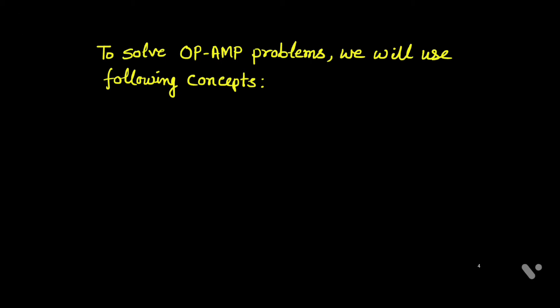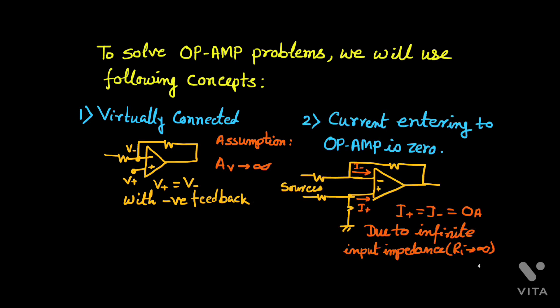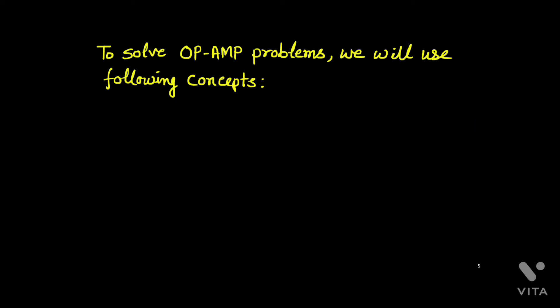To solve op-amp problems we will use four concepts. First, with negative feedback, the inverting terminal and non-inverting terminal potentials become the same — as if they are virtually connected. Second, the current entering the op-amp is zero, because of the high input impedance of the ideal op-amp, so R_input is infinite.